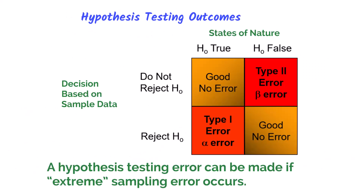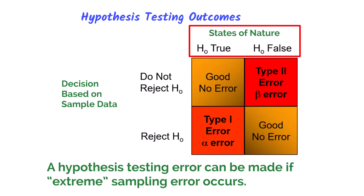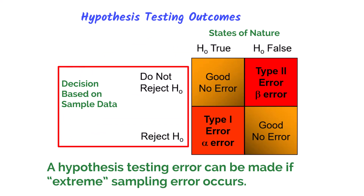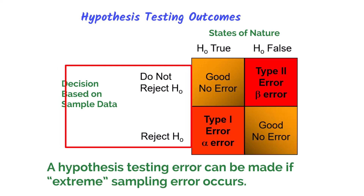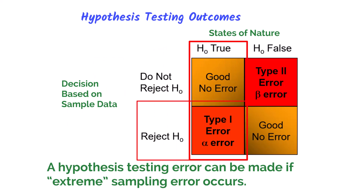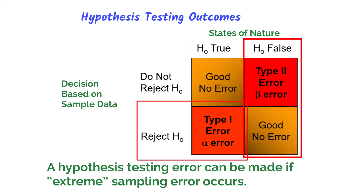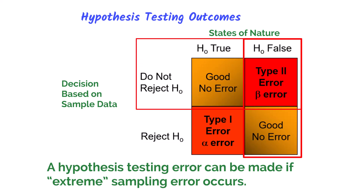Here are the possible outcomes of hypothesis testing. Recall from chapter 7 we learned about sampling error, where the sample is never a perfect representation of the population parameter. Due to the potential for extreme sampling error, two possible errors can occur when a hypothesis is tested. In the table, the states of nature on the top show that the null hypothesis could be true or false. The decision makers choose to either not reject or reject the null. If the null hypothesis is true but we reject it, a type 1 error has been made. If the null hypothesis is false but we do not reject it, then we have made a type 2 error.